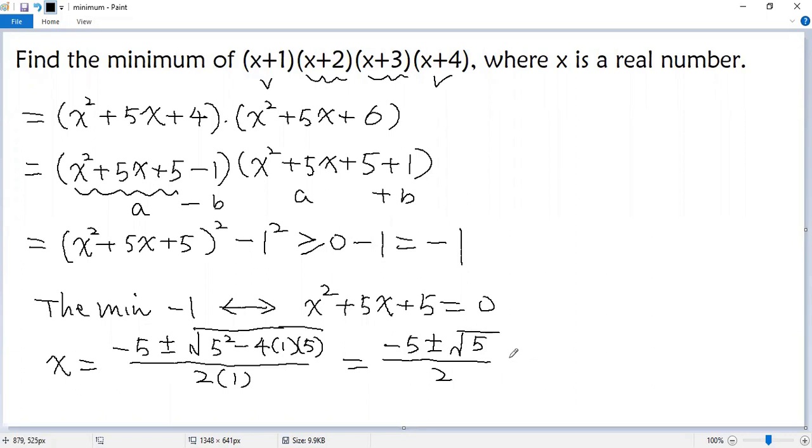That means when x equals negative 5 plus or minus square root of 5 over 2, the expression gets a minimum negative 1.